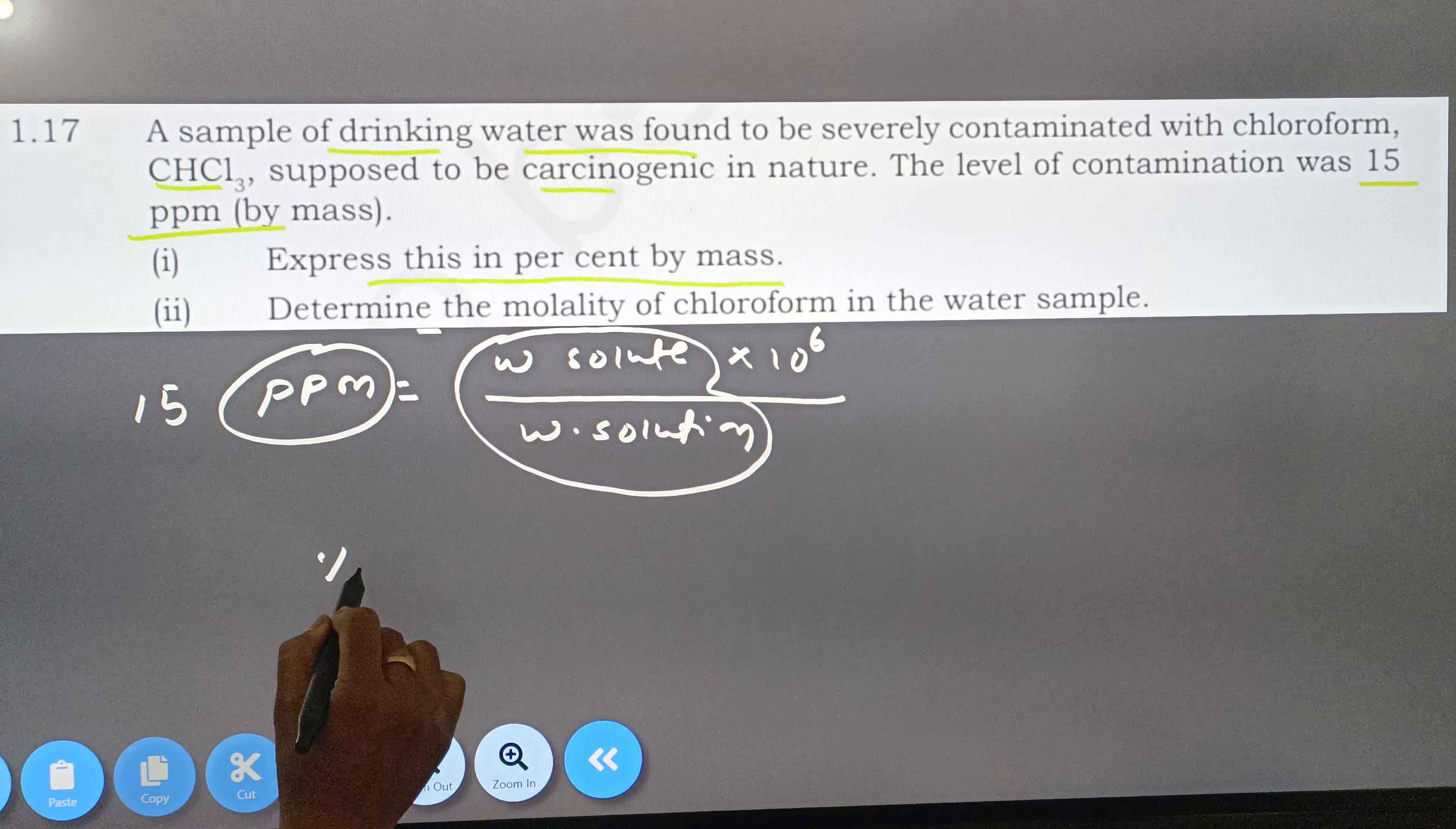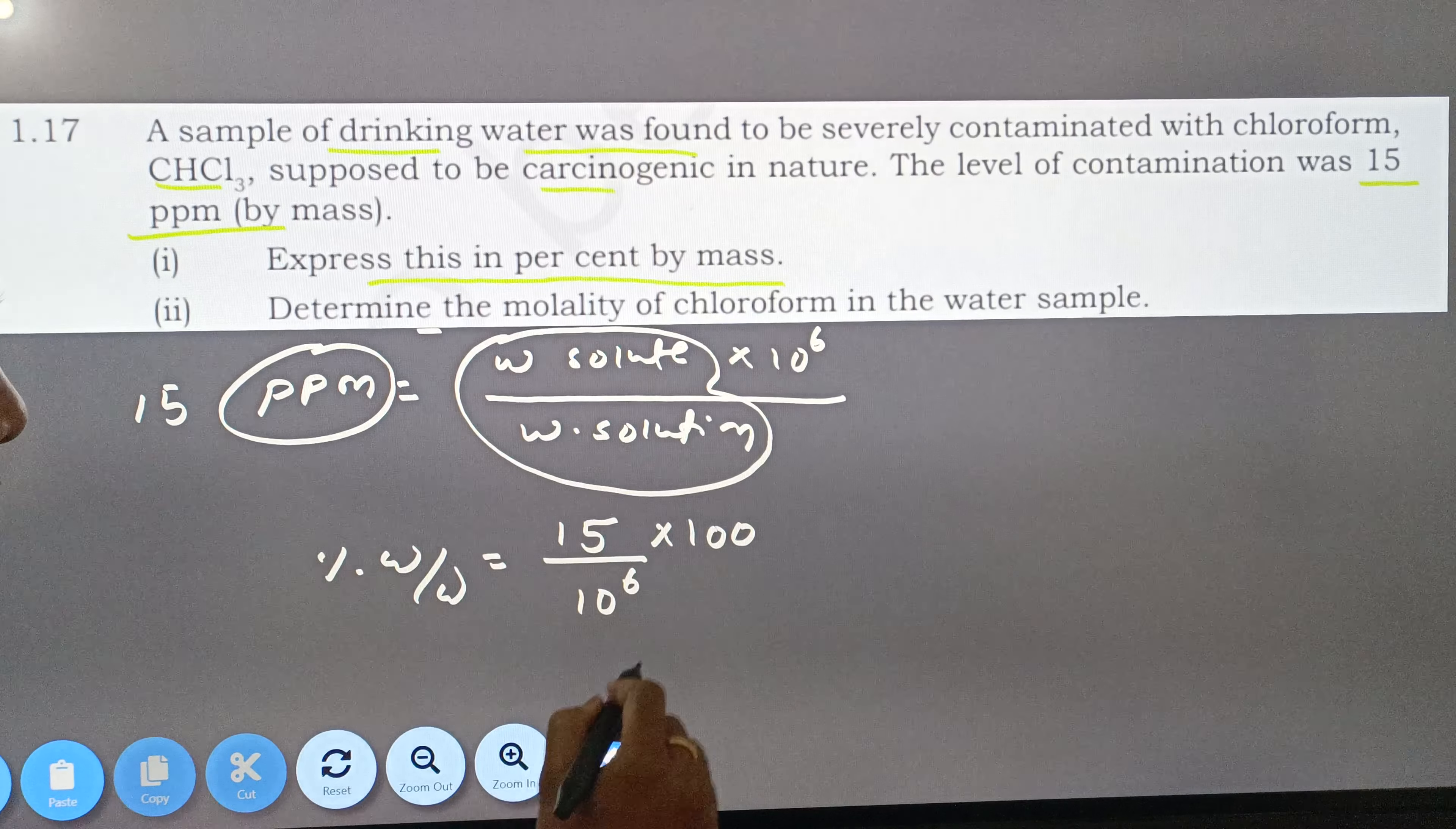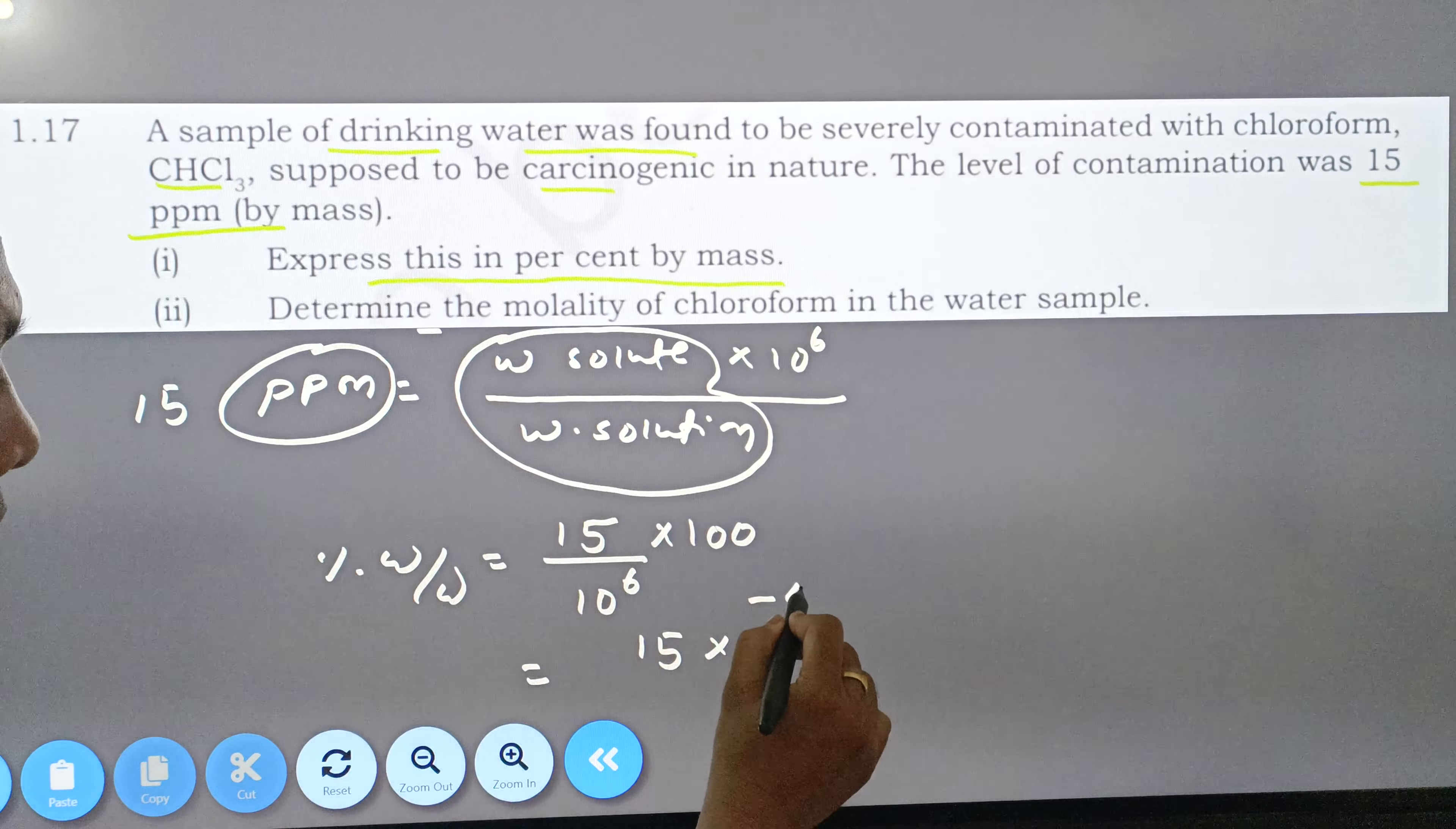This is the percentage of W by W: 15 divided by 10 to the power 6 into 100. So this is the percentage of W by W: 15 into 10 to the power minus 4.